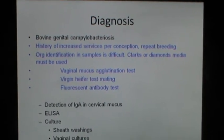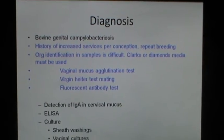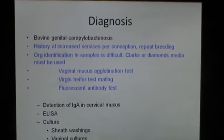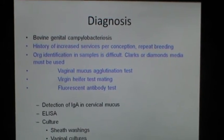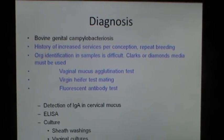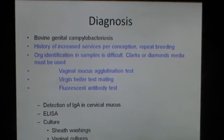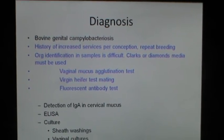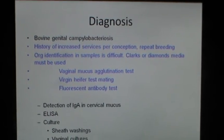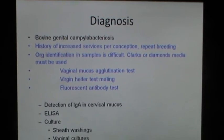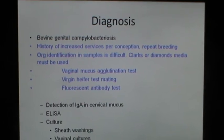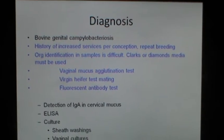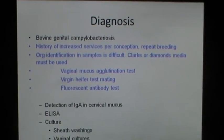Bovine genital Campylobacteriosis can be diagnosed by a history of increased services per conception and repeat breeding, though organism identification in samples is difficult. Clark's or Diamond's media must be used. Vaginal mucus agglutination test, virgin heifer test mating, or fluorescent antibody test can be used for diagnosis. Detection of IgA in cervical mucus, ELISA and culture of the organisms can be attempted. Preputial washings and vaginal cultures can be sent to the lab for organism identification.